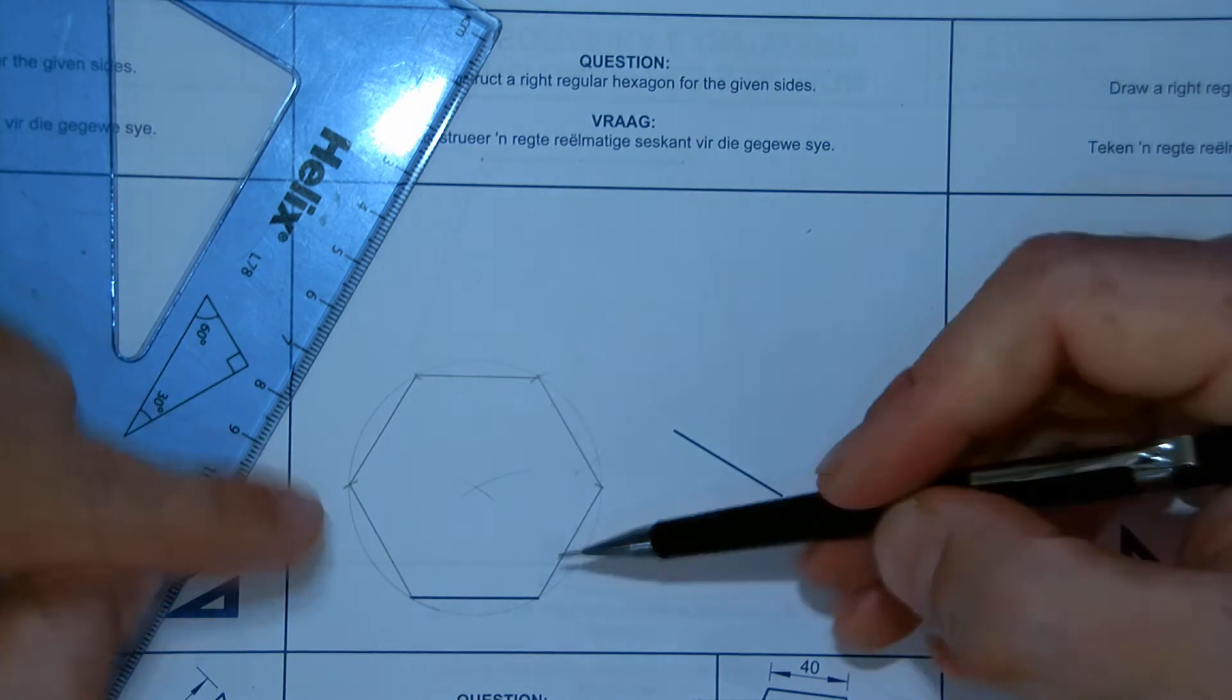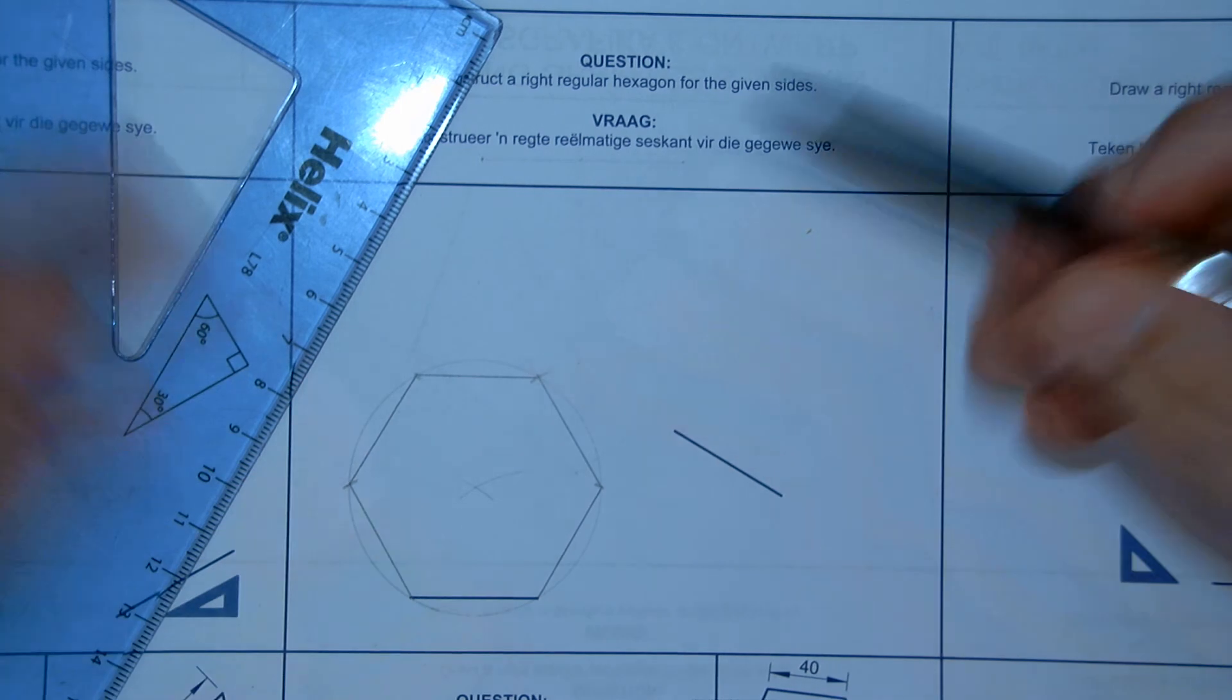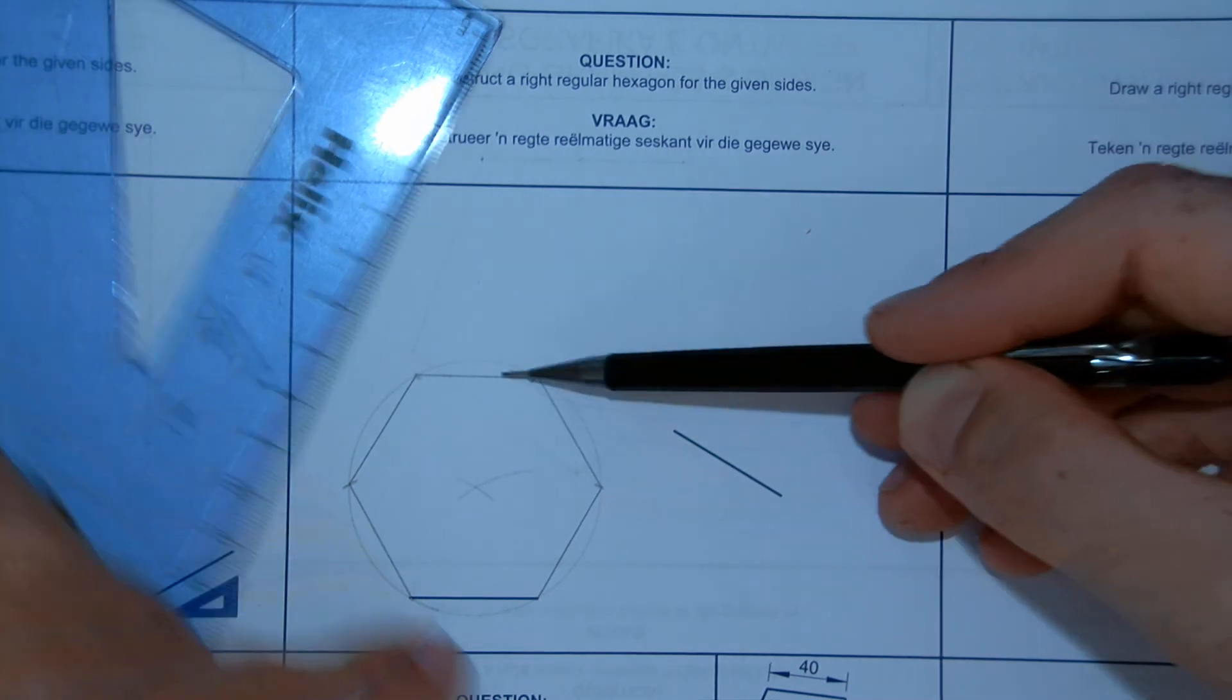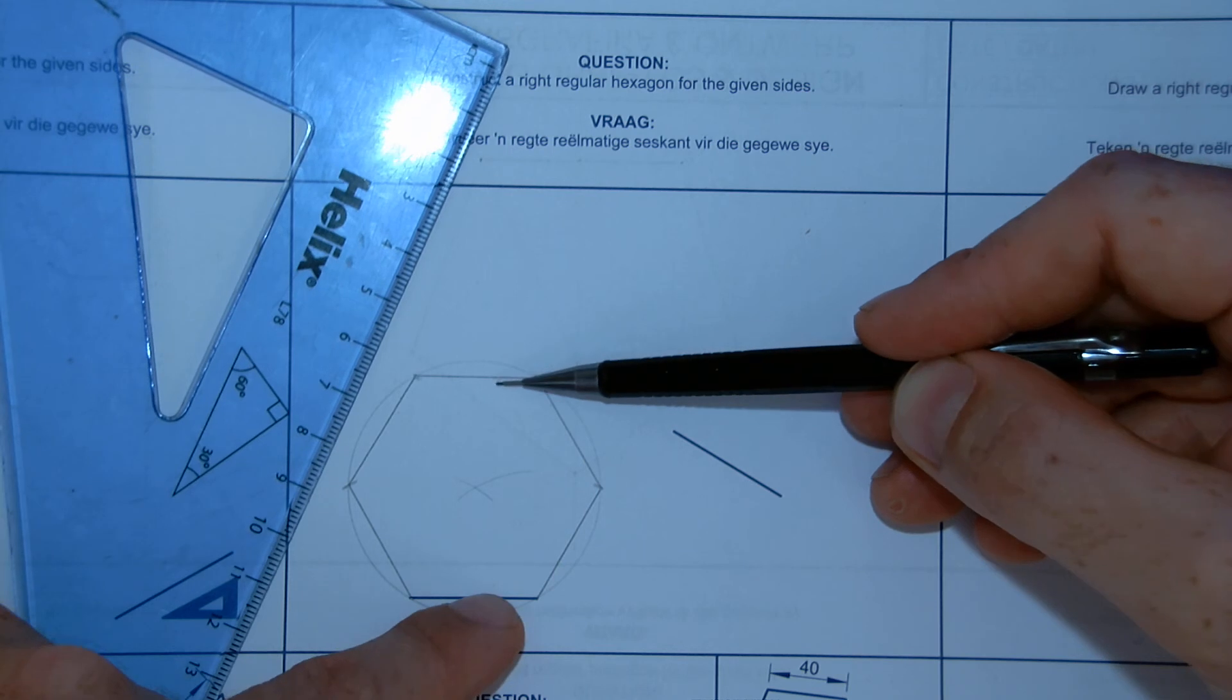But remember, with this method, the hexagon is on the inside. If, for some reason, they give you a dimension where it will be from side to side, they specify this distance, you cannot use this method.